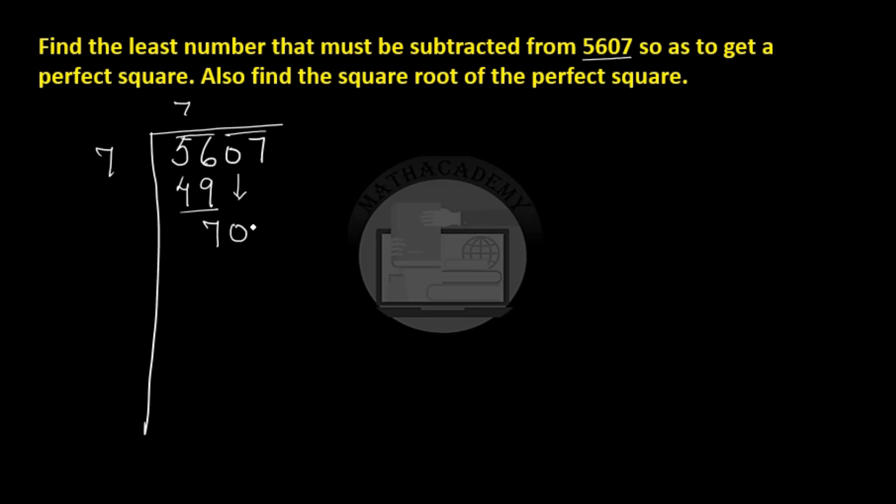We have 707 here and whatever is written here has to be added again, so 7 plus 7 is 14. Now let us try to fill in the block here. 144 times 4 is 576, and whatever we write in the block has to be added here.